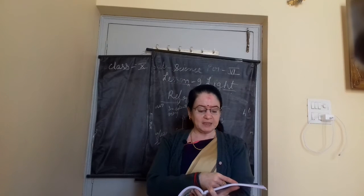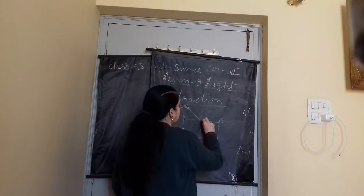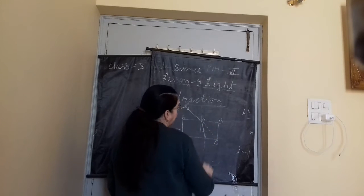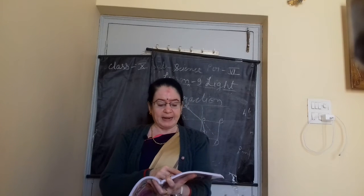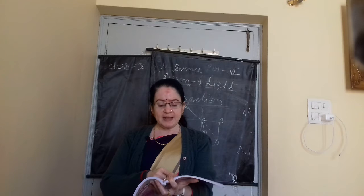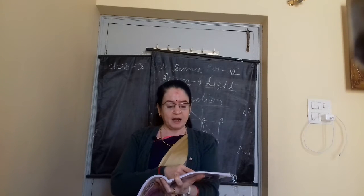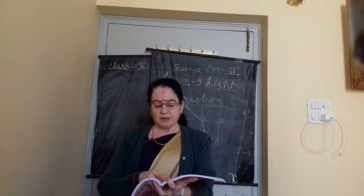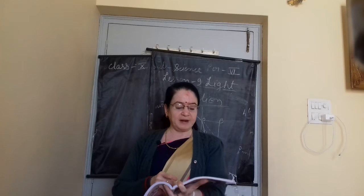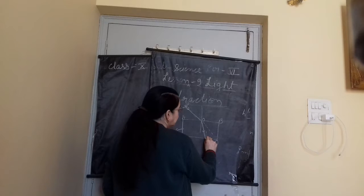The ray will bend toward the normal as it enters the glass slab. The ray PO gets refracted on entering the glass slab at point O. It comes out of the glass slab as shown in the figure. Since the ray goes from glass to air, it again gets refracted and bends away from the normal.